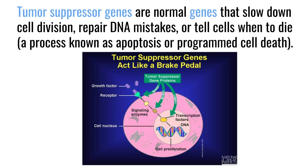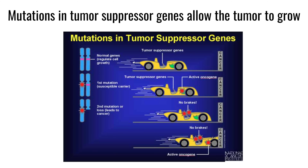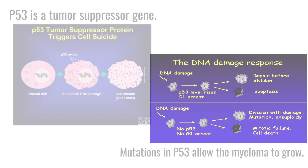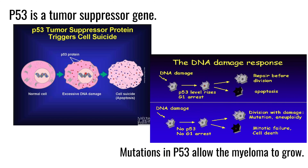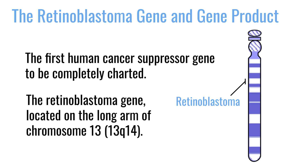Tumor suppressor genes are sort of the opposite of oncogenes. They are genes that suppress the development of tumors in the dish and in people, and when a tumor loses them, it loses the ability to suppress tumor growth. A really good example is p53 — that's a tumor suppressor gene, and when it's lost the tumor can grow out of control. Another important tumor suppressor gene for multiple myeloma is the retinoblastoma gene on chromosome 13.